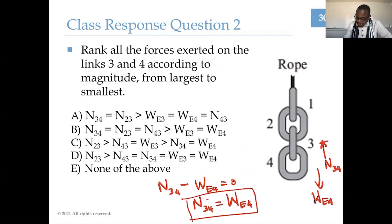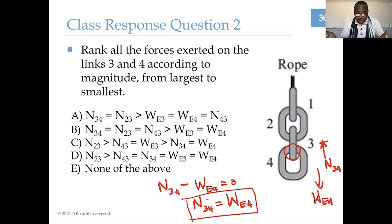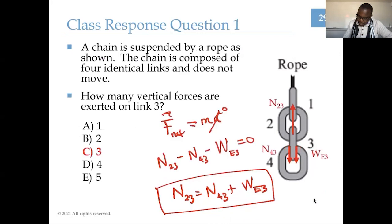If work is done on a system, the kinetic energy can increase. There can also be a change in potential energy within that system, which requires more than one object. For example, if you have two objects like a ball and the Earth, and the ball gets farther from the center of the Earth, it increases the gravitational potential energy of that ball relative to the Earth. The ball alone does not have gravitational potential energy — it needs to be associated with another object. There can also be elastic or spring potential energy: if a spring is compressed or stretched, it can have energy that results in a change in kinetic energy. The total mechanical energy of a system is kinetic plus potential energy.